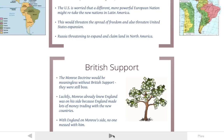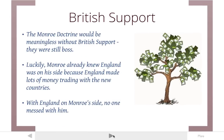Those are some big words from the United States. The reason the United States could say something like that to European powers is because Britain was on board. If Britain didn't want to listen to the United States, they wouldn't have to — Britain is still the most powerful country in the world. But President Monroe knew that England was on his side because England made tons of money trading with these new independent countries. So England didn't want anyone to take these new countries over either. Now that England was on Monroe's side, no one messed with them and the Monroe Doctrine stood up.